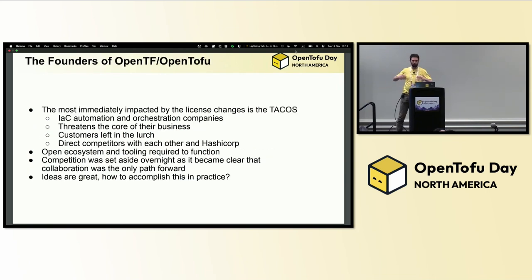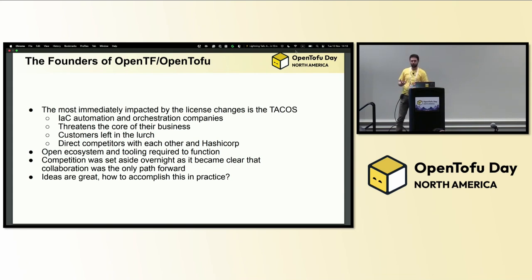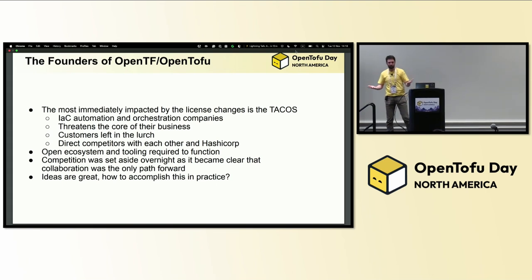We said the OpenTF manifesto was out — what steps were taken? The most immediately impacted individuals and organizations were the TACOs — infrastructure automation and orchestration companies. A lot of the companies on my shirt here and around the convention: HashiCorp is competing with them. This change threatens the core of their business. All of their customers are asking: what do we do now? We can't run new versions of software we've invested hundreds if not thousands of man hours into.